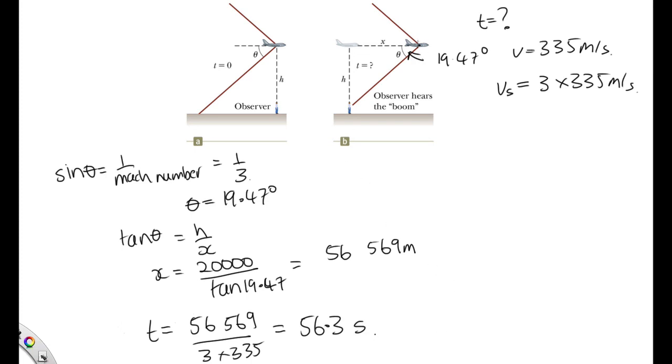So that's the distance the plane has traveled. Now, in regards to part B, it's still at the altitude of 20,000 meters. And it has traveled 56.6 kilometers horizontally.